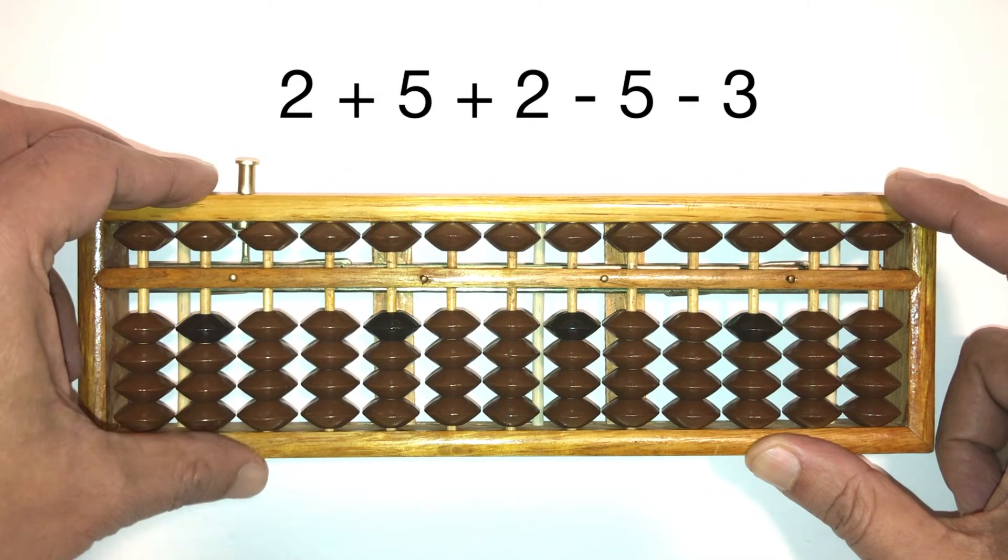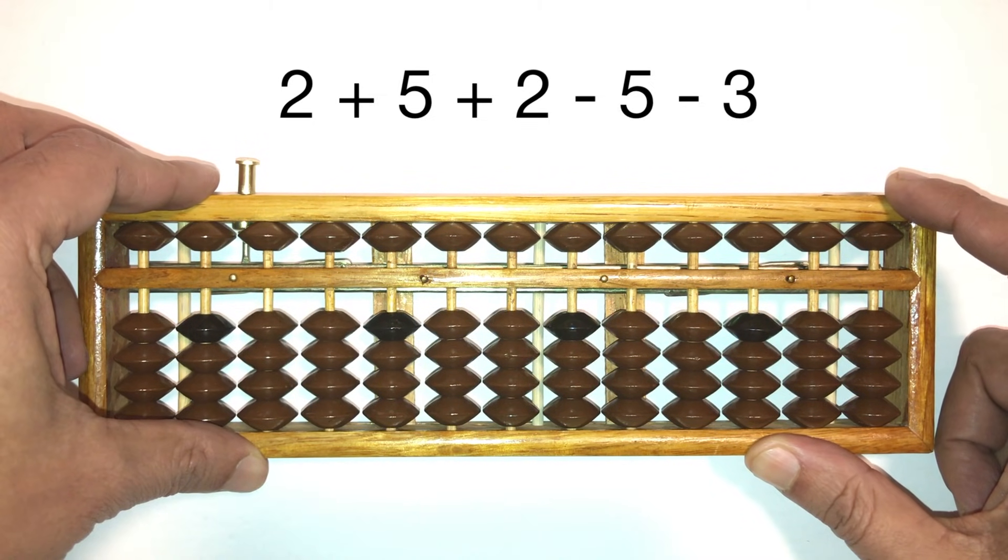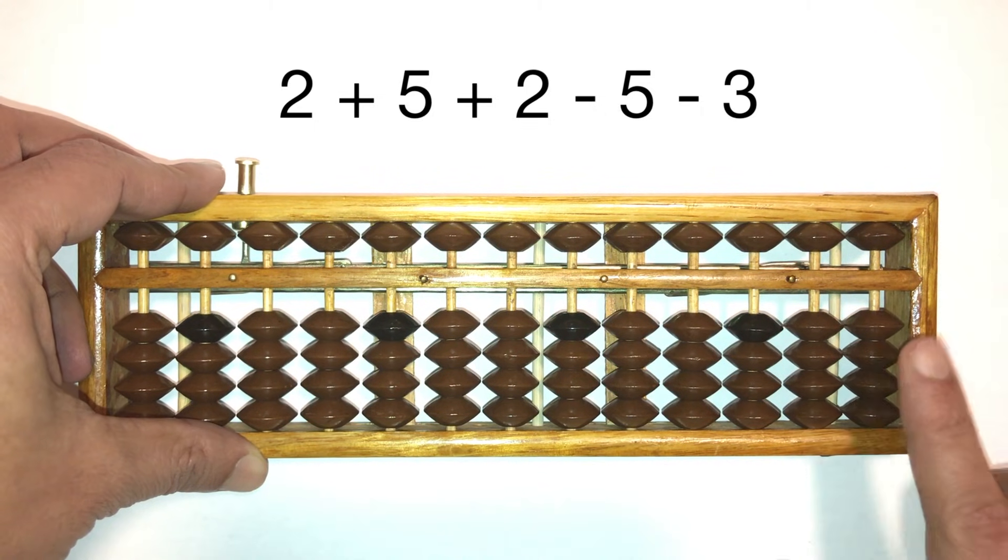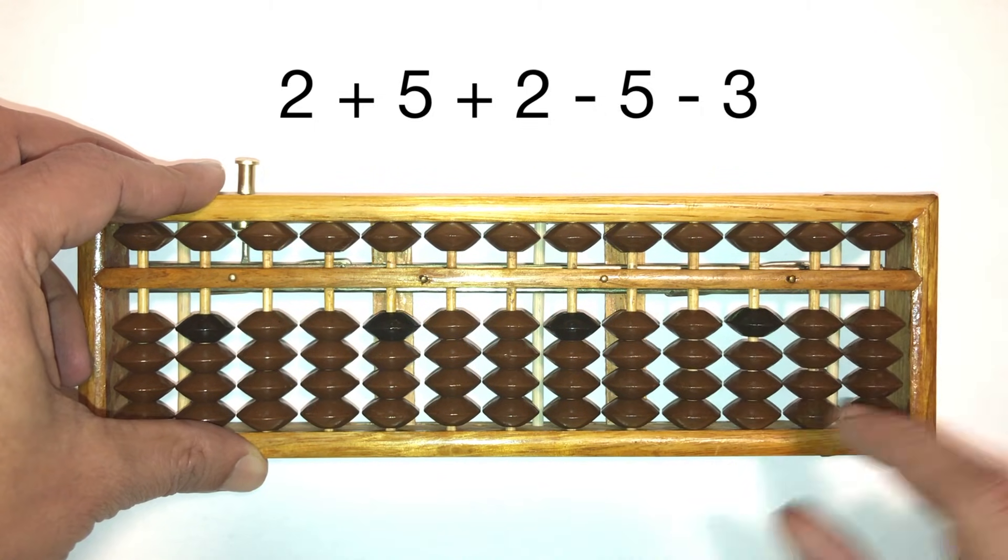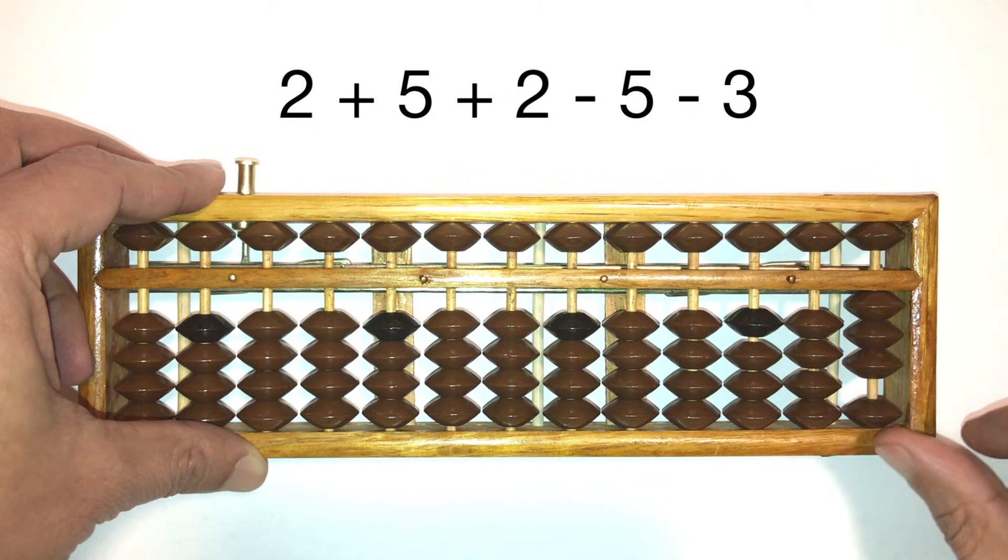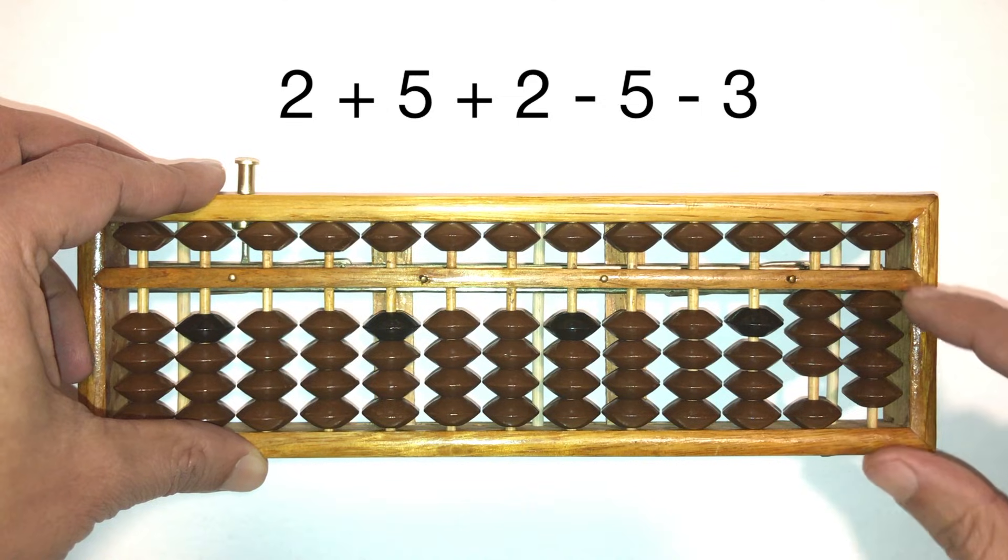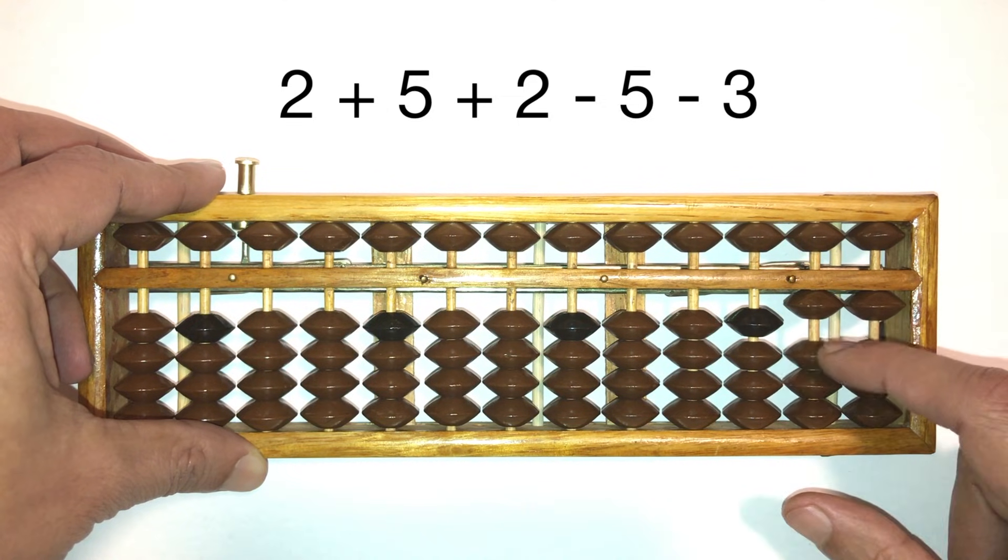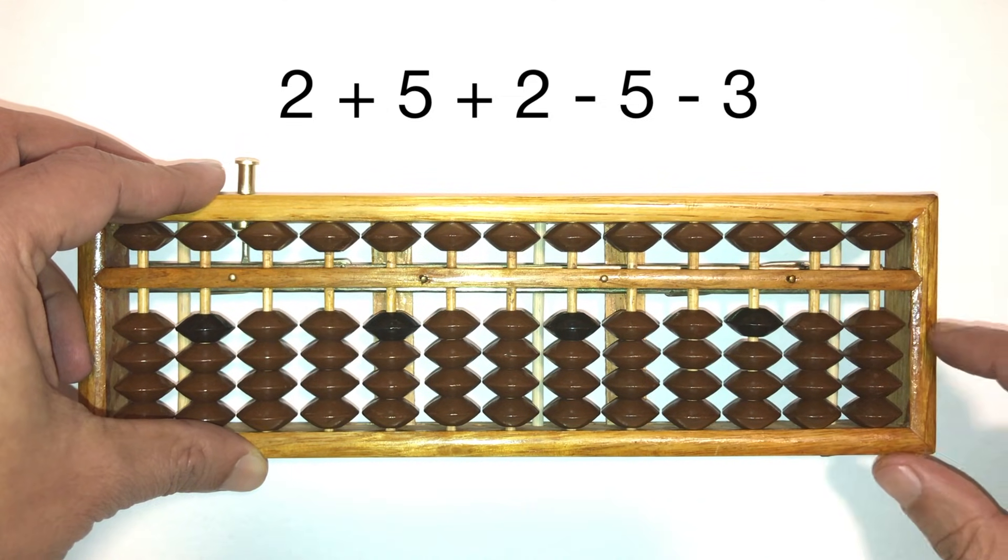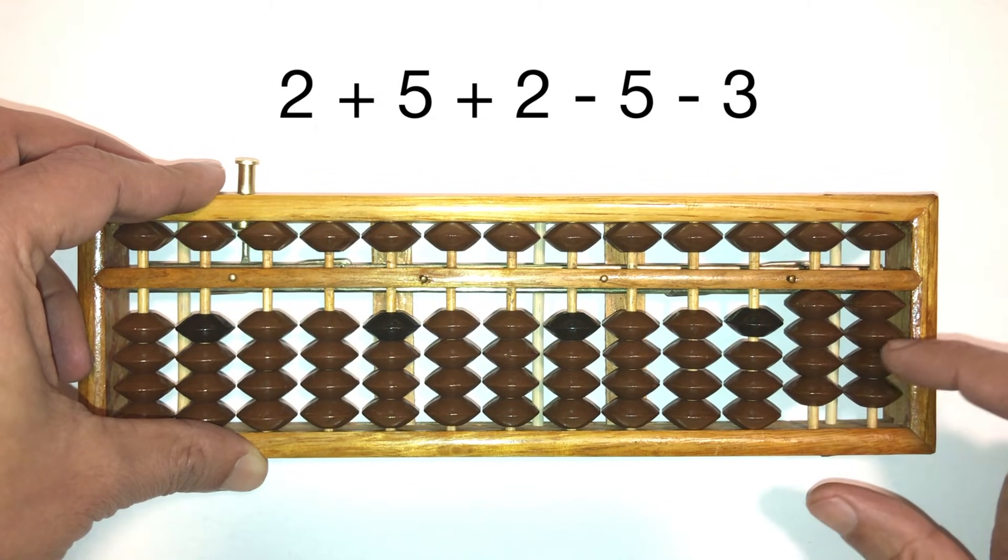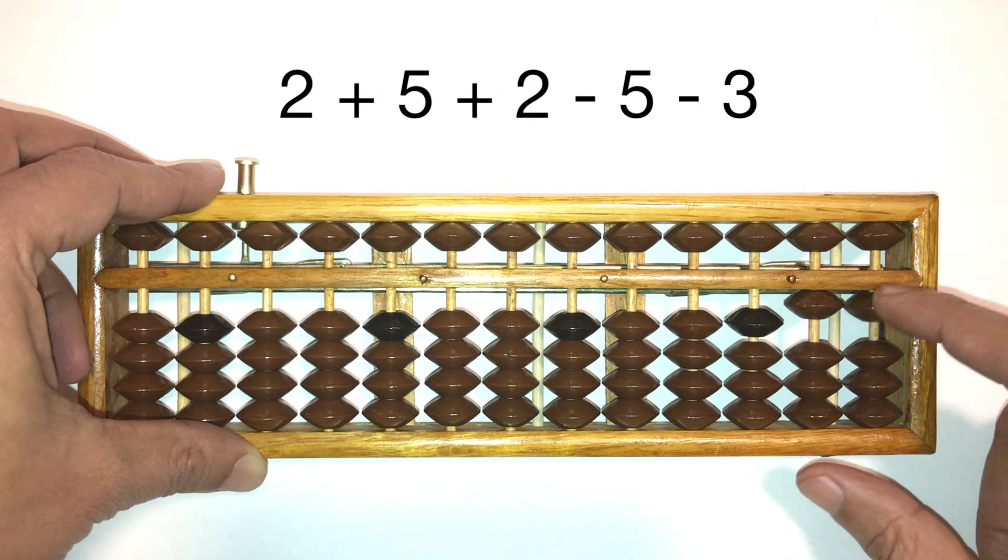Now this time I'd like you to pay attention to the fingers that we use to move the beads. So for the lower beads, when adding we use our thumb to push them up towards the answer bar. And we use our pointer to move them away from the answer bar. So for the lower beads, we add with the thumb and we subtract with our pointer fingers.